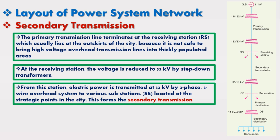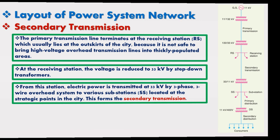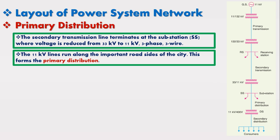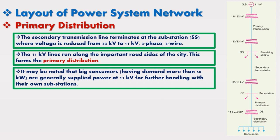Now I am going to discuss primary distribution. The secondary transmission line terminates at the substation where voltage is reduced from 33 kV to 11 kV, three-phase, three-wire. The 11 kV lines run along the important roadsides of the city, forming the primary distribution. It may be noted that big consumers having a demand of more than 50 kW are generally supplied power at 11 kV for further handling with their own substation.